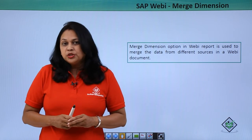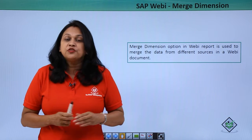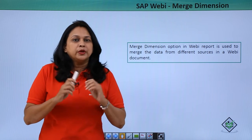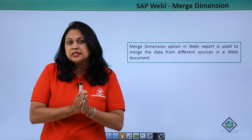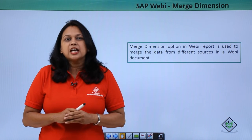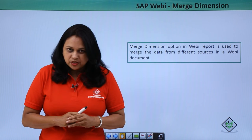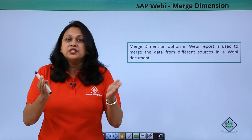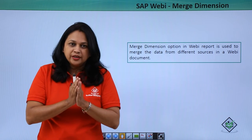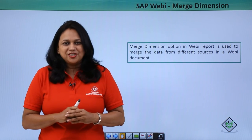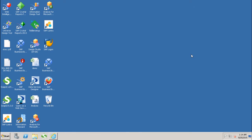For example, when you require objects to be merged from different data sources, you have created query 1 and query 2 in the query panel. When you combine both the queries in a single WebEye report, objects from both the queries are shown in the list of available objects. So you have the Merge Dimension option in the WebEye user interface which is used to merge the queries. Let us go to the SAP system and see how to use Merge Dimension.